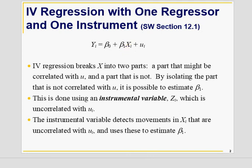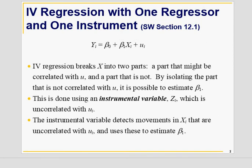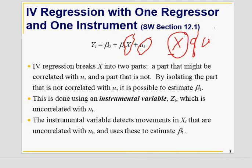When the assumption that X and U are uncorrelated is violated, the name of the game is that we need to separate the effect — we need to differentiate the part of X that is uncorrelated with U. Some part of X is uncorrelated with U, and we need to find that part. For that we need to find a variable — a proxy for X — which is correlated with X but uncorrelated with U. If a variable satisfies these two conditions, it is called an instrumental variable.